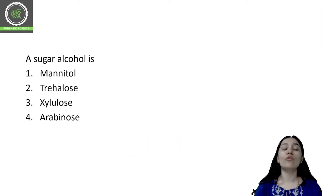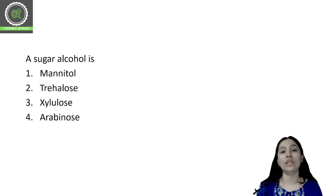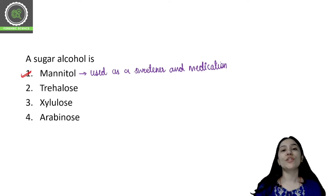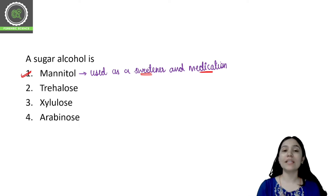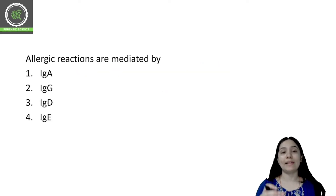Let's start today's class. The first question is: sugar alcohol is? You have four options — one is the right answer. You can pause the video to choose your answer. The correct option for this question is mannitol. Mannitol is a sugar alcohol which is used as a sweetener and as a medicine — specifically as a low calorie sweetener and as a medication.